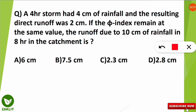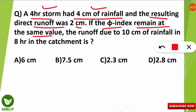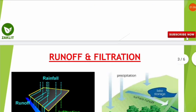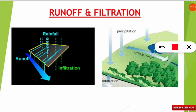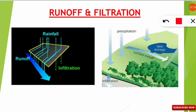Let us read the questions coming in the GATE examination as per the GATE syllabus and sample paper. The first question is: a 4-hour storm had 4 cm of rainfall, and the resulting direct runoff was 2 cm. If the phi index remained at the same value, the runoff due to 10 cm of rainfall in an 8-hour storm in the catchment is how much? Many terms are used here — catchment, runoff, infiltration, phi index.